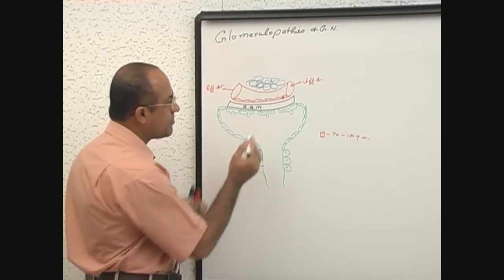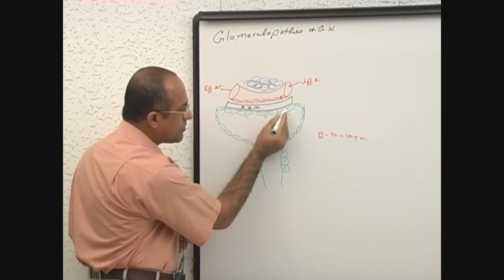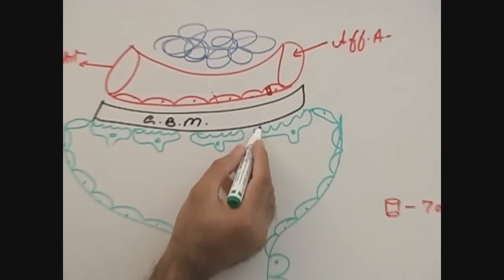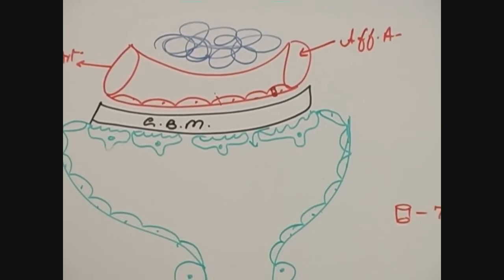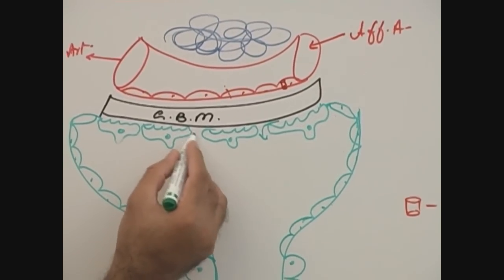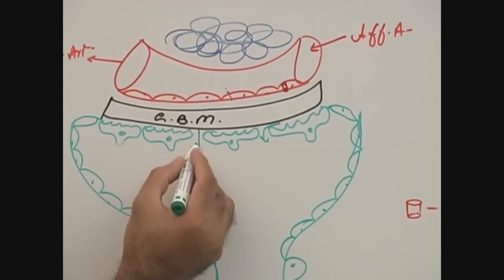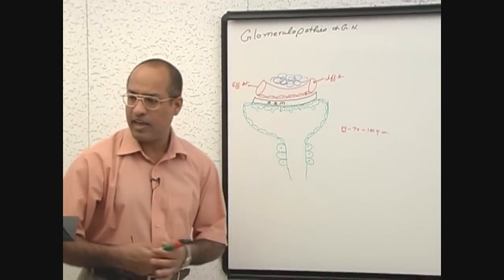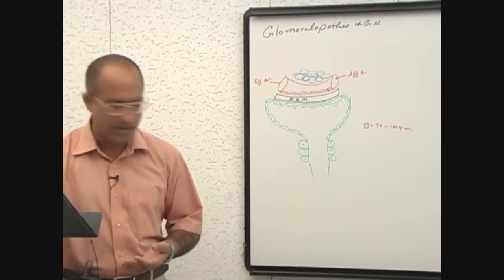Opposed to that, the size at this side, epithelial cells, there are filtration slits. You know, these two points between the epithelial cells, they are called filtration slits. Let me tell you how they are applied there.